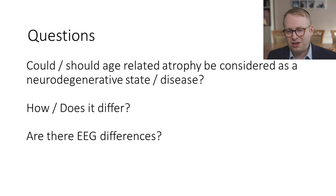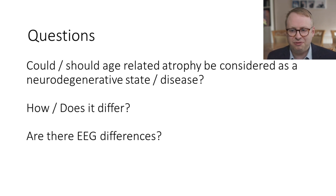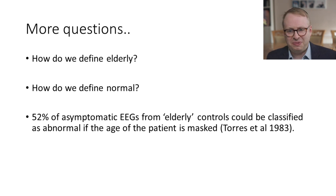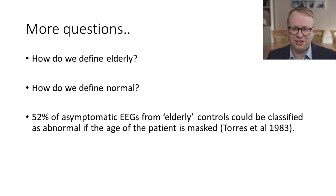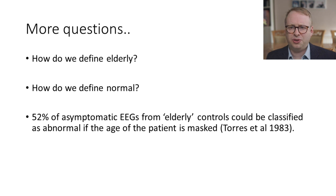Let's start by considering a couple of different questions. Could or should age-related atrophy be considered a neurodegenerative state or disease? How does it differ and are there EEG differences? How do we define elderly? How do we define normal? And in fact, if you mask an EEG age from the person reporting it, we can actually find that about half of them, in those who are more elderly, would be classified as abnormal if we do that. So what exactly do we mean and what do we see on the EEG?